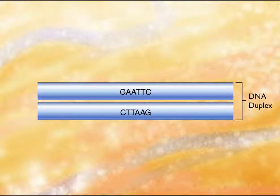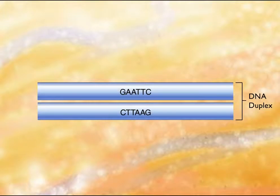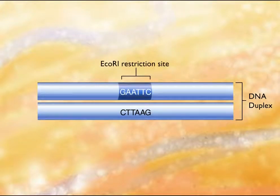Restriction endonucleases are enzymes that cleave DNA at specific nucleotide sequences. The sequence recognized is often four to six nucleotides long. For example, the restriction endonuclease EcoR1 recognizes the sequence G-A-A-T-T-C.